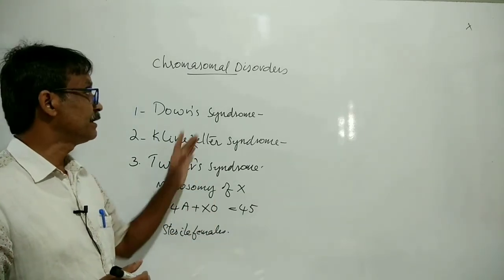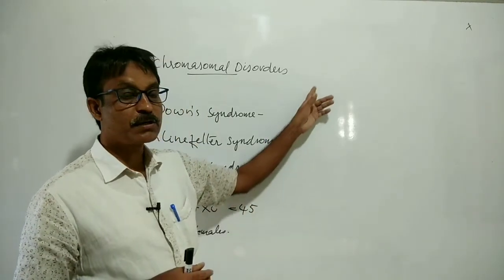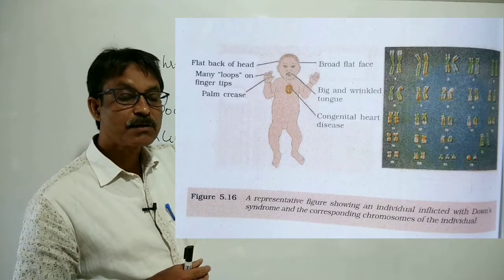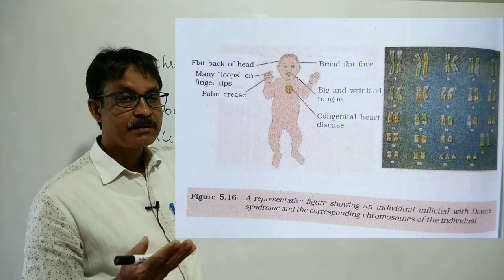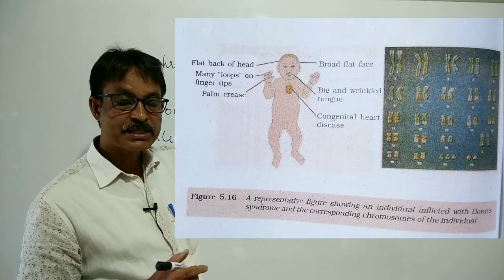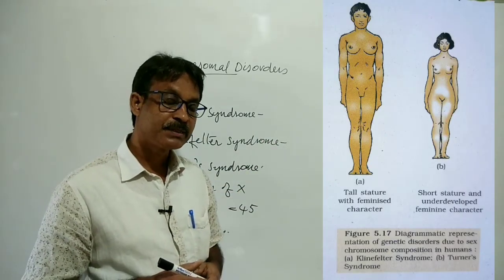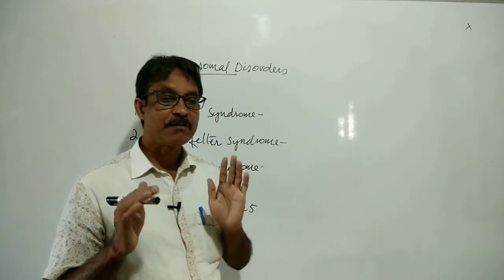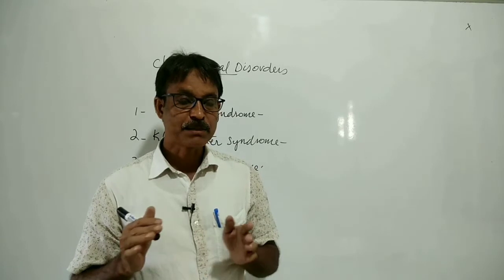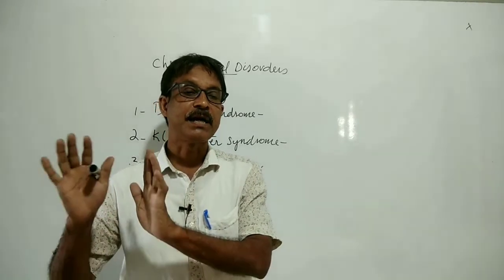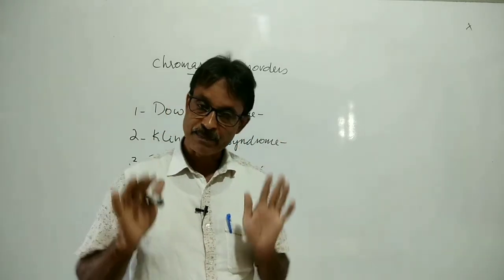So these are the chromosomal disorders. This is about our first chapter in genetics — principles of inheritance and variation — a very important topic.